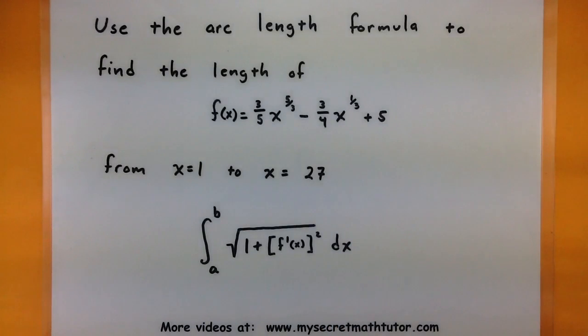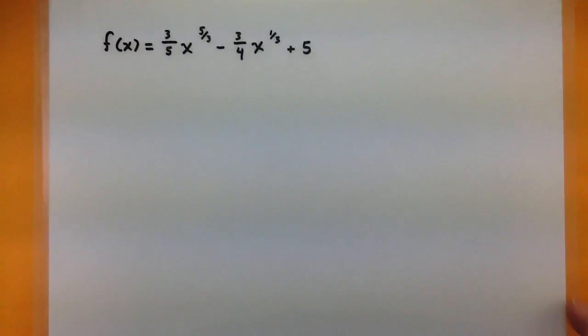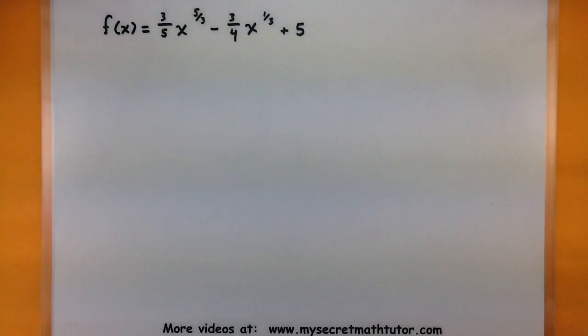So one of the biggest challenges that we come across when using this formula is taking our function, looking at its derivative, then being able to square it, and hopefully have some solution or being able to do something when it's underneath that square root. You'll see that this one will have to go through quite a few hoops to do that, but in the end, it'll be okay. Alright, so let's get started.